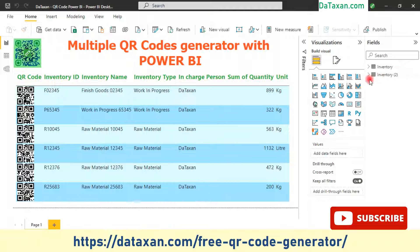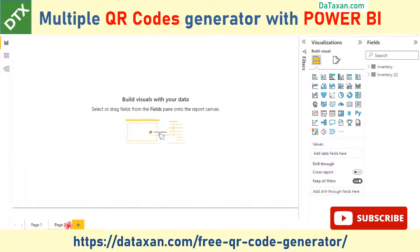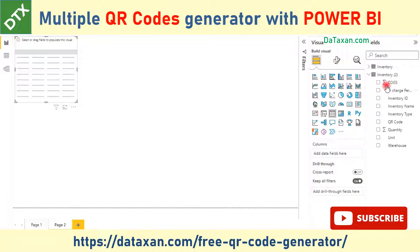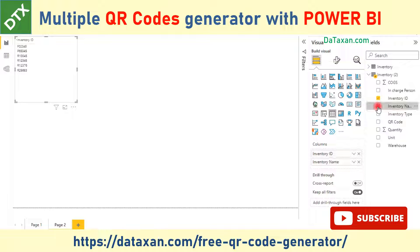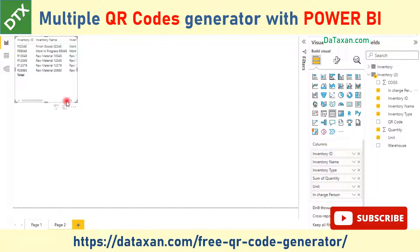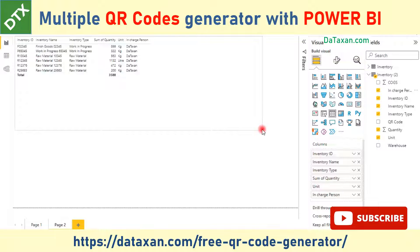Now you can see we have the inventory table here. We also create a new page, and here you can expand the inventory table. First, you create a table visual. In this table visual you can add any fields you want to view — for example, the inventory ID, inventory name, inventory type, quantity, unit, the responsible person — and then you enlarge it. The last important field is the QR code.